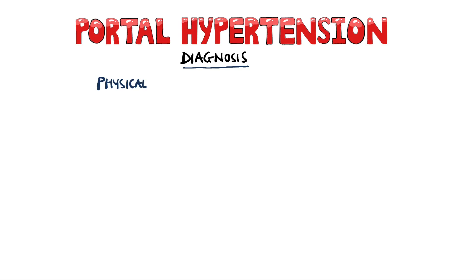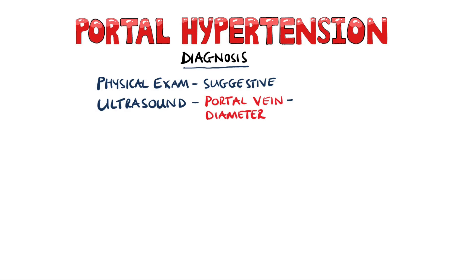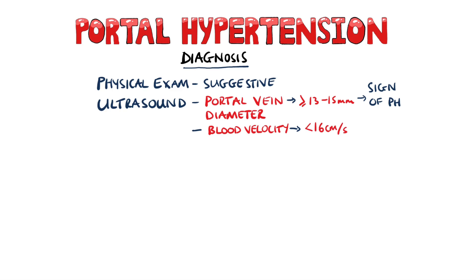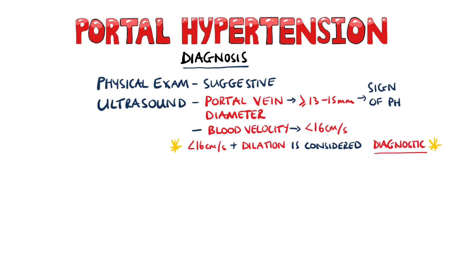For the diagnosis, the physical exam may show signs such as hepatosplenomegaly, ascites, or varices, but these signs only suggest portal hypertension. Ultrasound is used to look at the diameter of the portal vein, with measurements above 13 to 15 mm being considered a sign of portal hypertension. Using the Doppler setting and measuring the velocity of the blood is also useful; a velocity below 16 cm per second in the setting of dilation in the main portal vein is considered diagnostic.